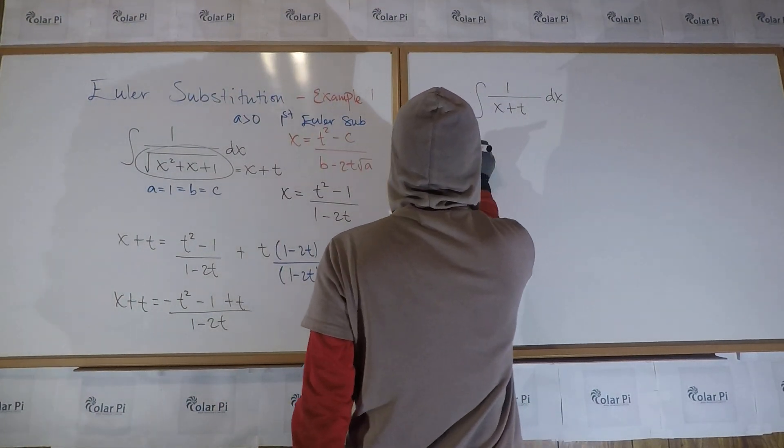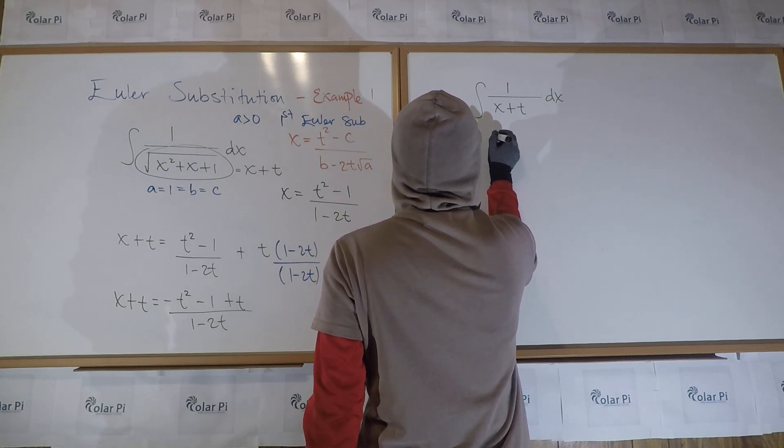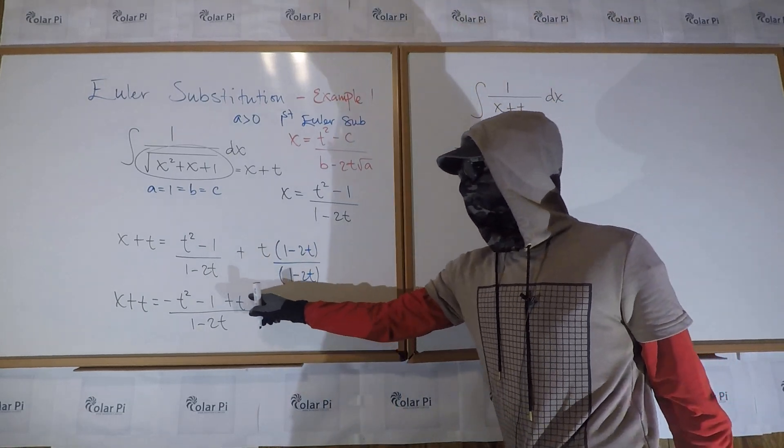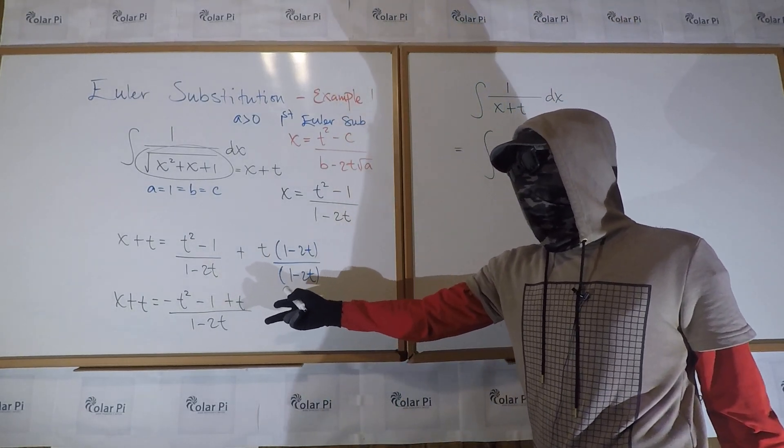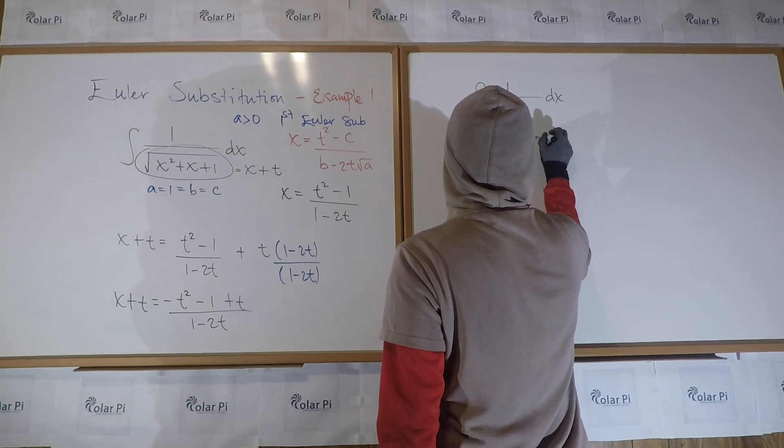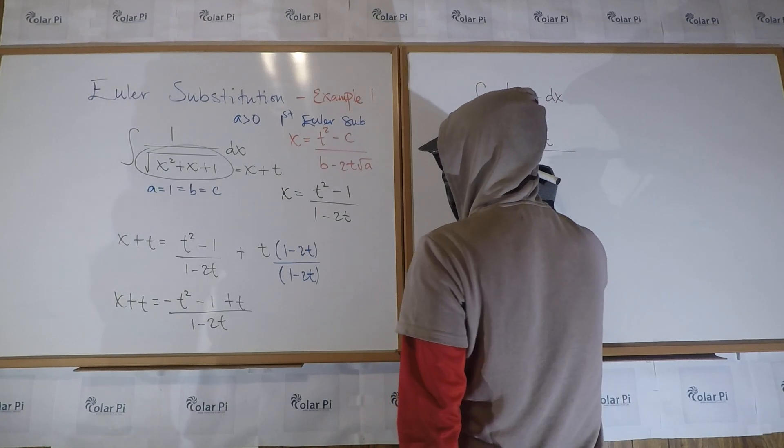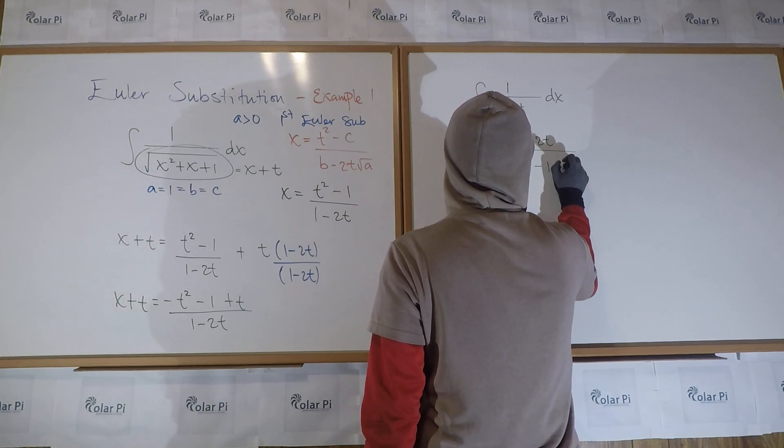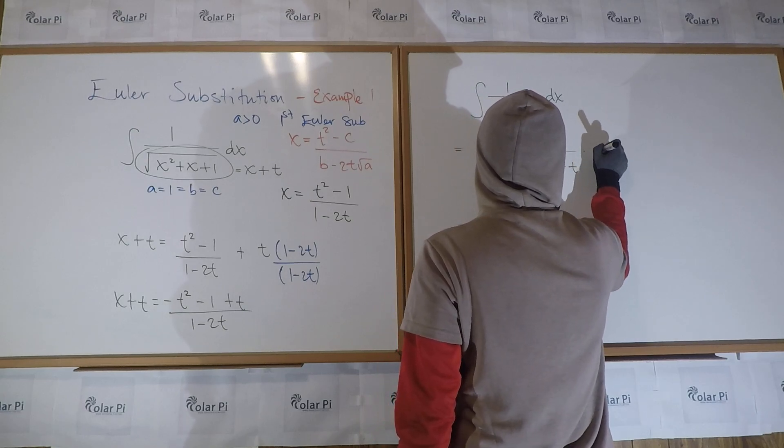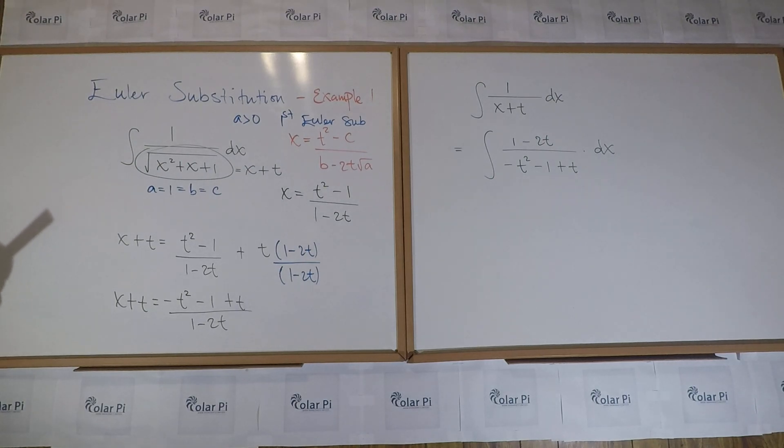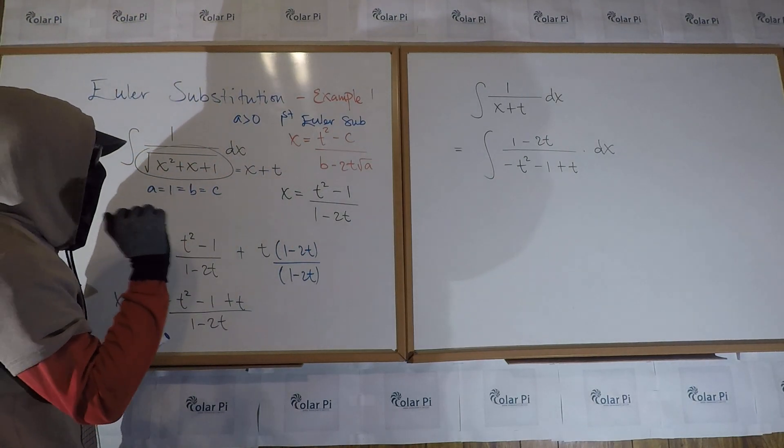So X plus T is really T squared minus one plus T minus two T squared divided by one minus two T. But let's clean up here. So T squared minus two T squared is just a minus T squared. Otherwise, we have this divided by one minus two T. That's X plus T.